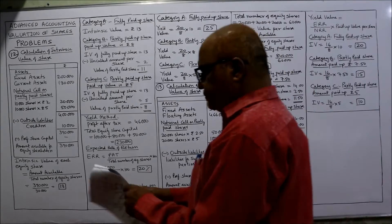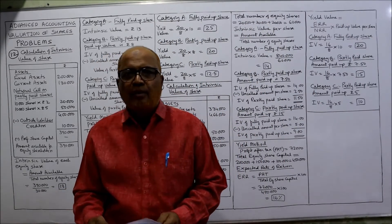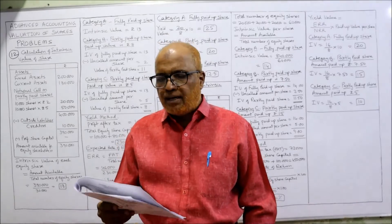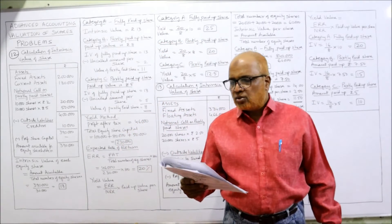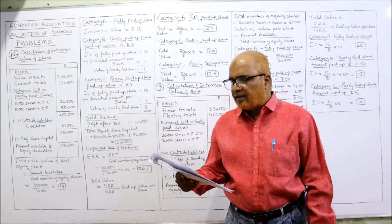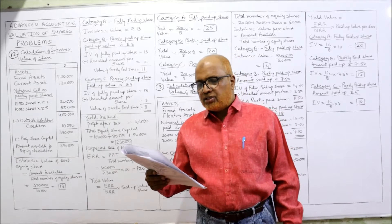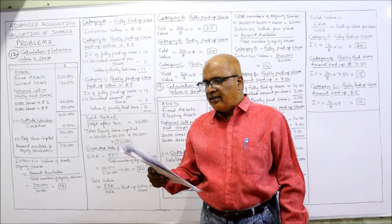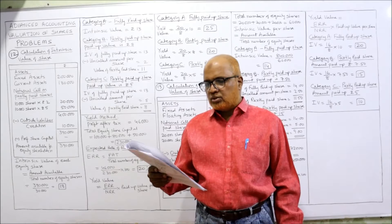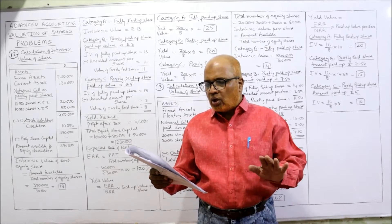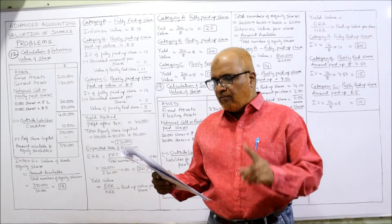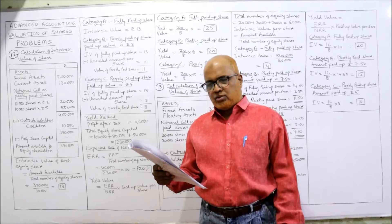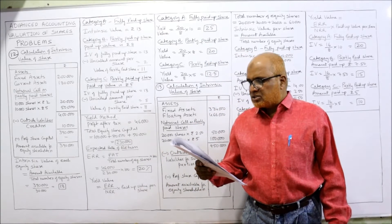Now see the 12th problem. The following is the balance sheet of Mahesh Company Limited as on 31st December 1996. On the equity and liabilities side: share capital 2 lakh 30,000; reserves and surplus 1 lakh 10,000; no non-current liabilities; one current liability — trade payable 10,000. The total of liabilities is 3 lakh 40,000.